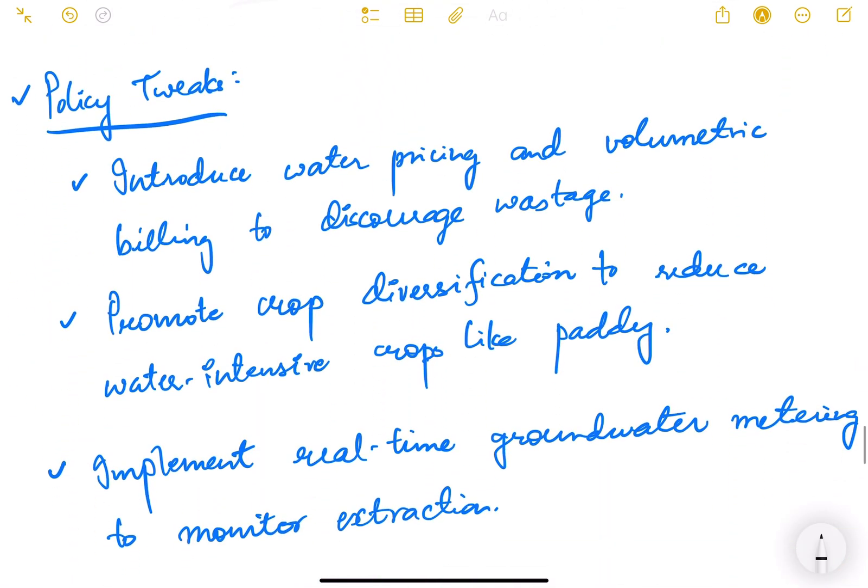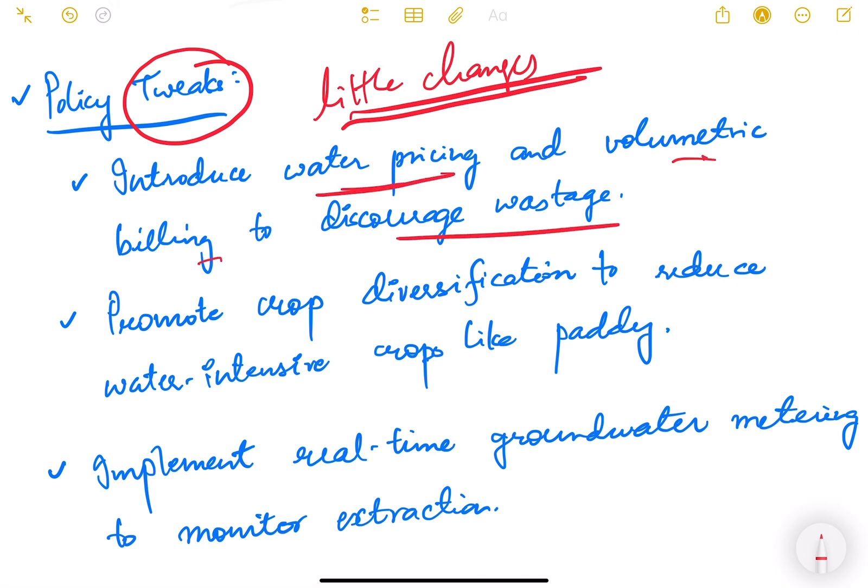Some policy tweaks also need to be done, meaning little changes. One is introduce water pricing and volumetric billing to discourage wastage. If people start paying then they will not over extract. Promote crop diversification to reduce water intensive crops like paddy. A very basic solution but very challenging to implement because it is very difficult to convince a farmer to switch from paddy or wheat to any other crop. For paddy or wheat there is MSP, government procurement is done for these crops. Farmers have an assured income or assured price for these particular crops.